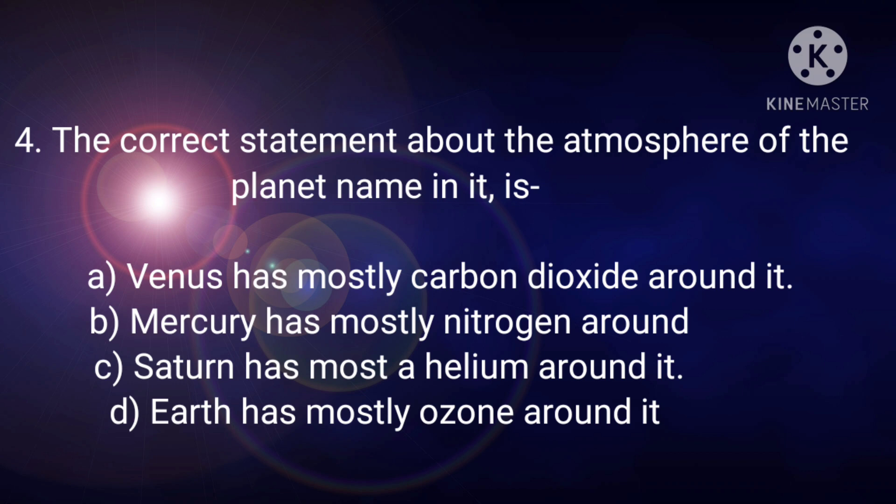Next is, the correct statement about the atmosphere of the planet named in it is, options are Venus has mostly carbon dioxide around it, Mercury has mostly nitrogen around it, Saturn has mostly helium around it, and Earth has mostly ozone around it. Out of the given options, option D, Earth has mostly ozone around it is the correct option.